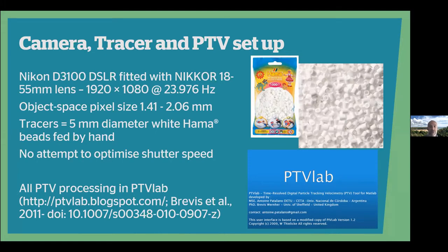This converted to an object space pixel size of 1.41 to 2.06mm. We seeded the flow by hand using 5mm white plastic hammer beads and made no attempt to optimise the shutter speed, so in some videos the beads appear lozenge-shaped because the shutter speed was too long. All PTV processing was conducted in PTVlab, though I did have to modify PTVlab so that it worked in the most current version of MATLAB.